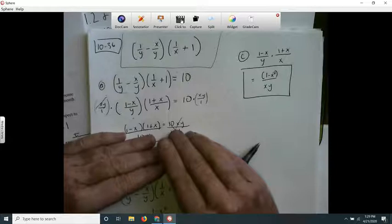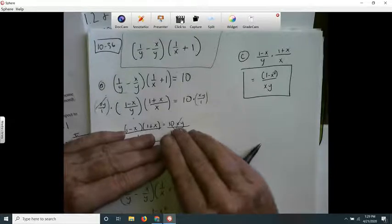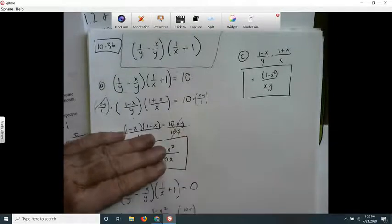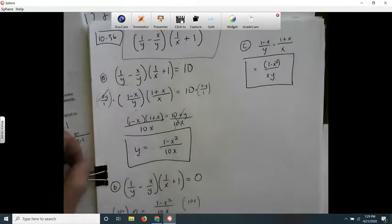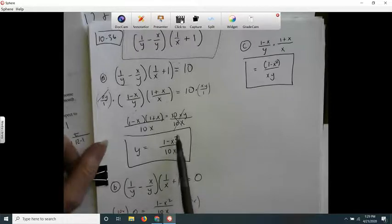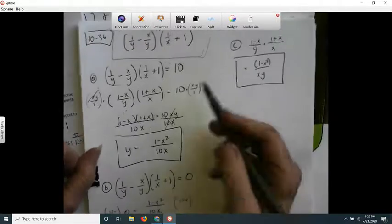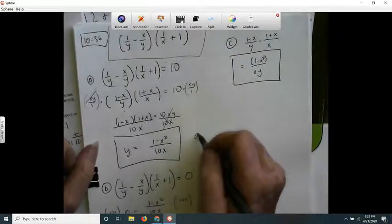I divide both sides by 10x and I get this. You're wondering where did this come from? It's because of the difference of squares, like a squared minus b squared.